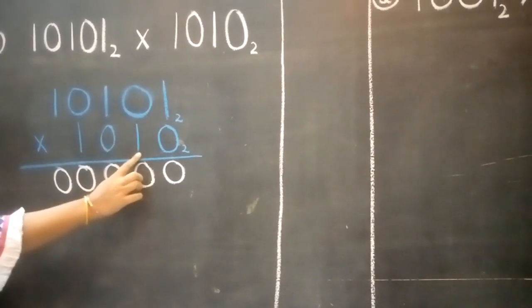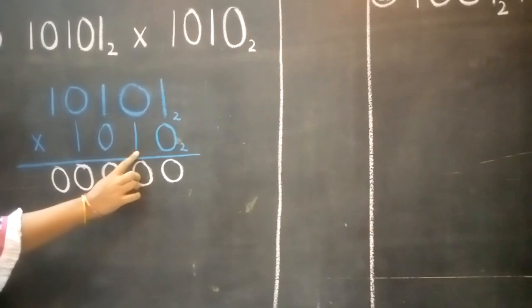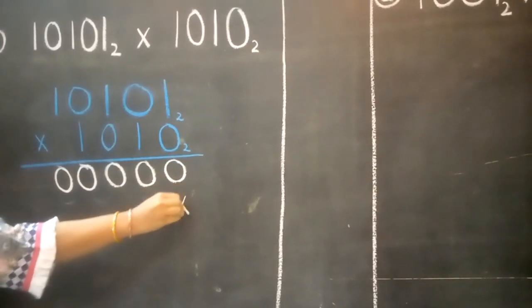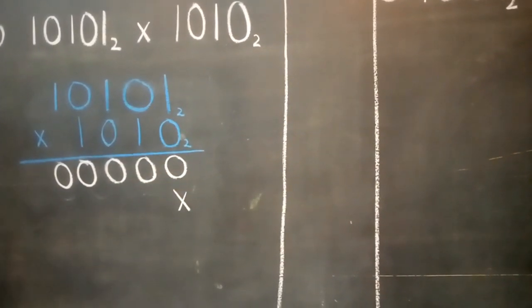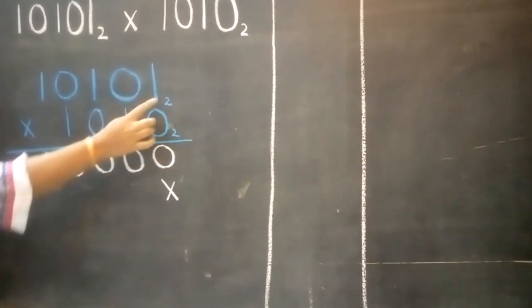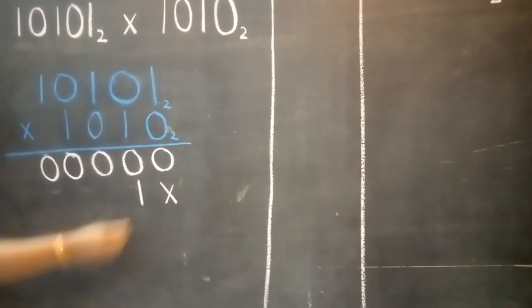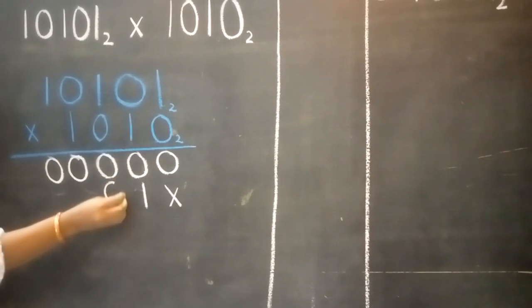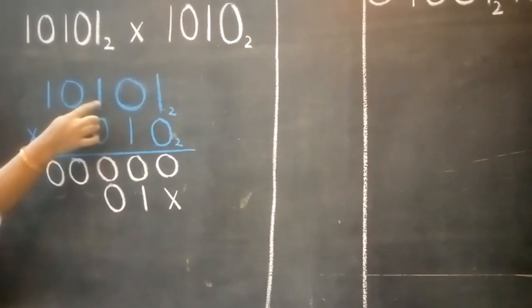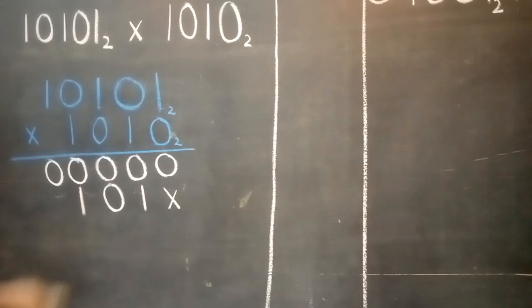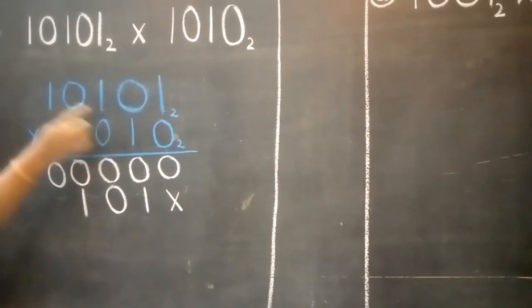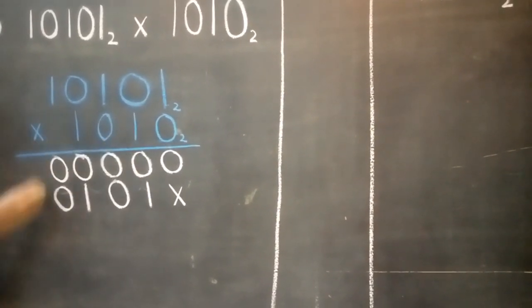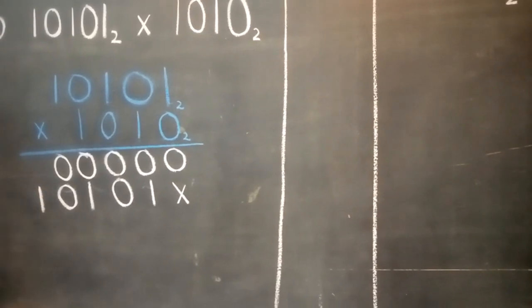Now we will multiply our second digit. So below the first digit we will put a cross. Now 1 ones are 1, 1 zeros are 0, 1 ones are 1.